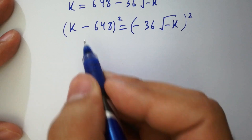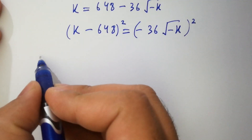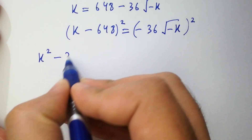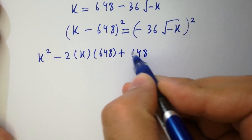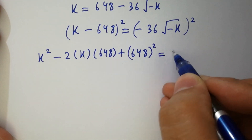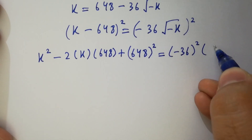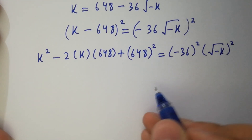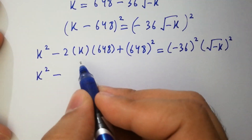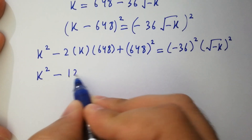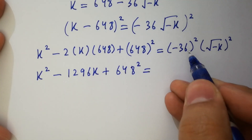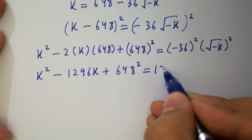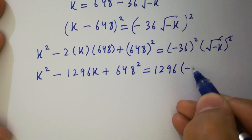Apply formula (a minus b) squared equals a squared minus 2ab plus b squared. We get k squared minus 2 times 648k plus 648 squared, and on the right minus 36 squared times minus k, which gives plus 1296 times k. The square cancels from square root leaving minus k, so the right side becomes plus 1296k.